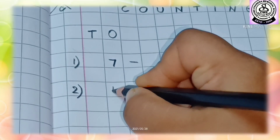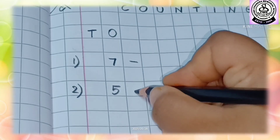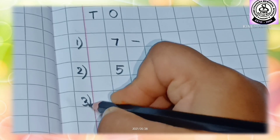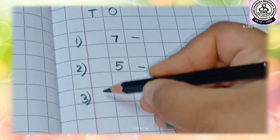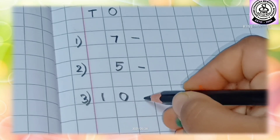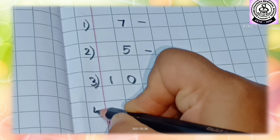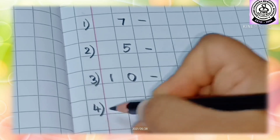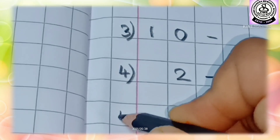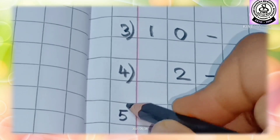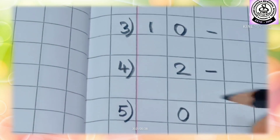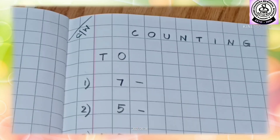Give a small hyphen or a small dash. The next number, number two. We will write here number five. You can give any number that you want. This is number three, and one under tens and zero under ones. The next number is four. Write here two. After four, we will write here number five. And here we will write zero. Then, we will give a small hyphen.